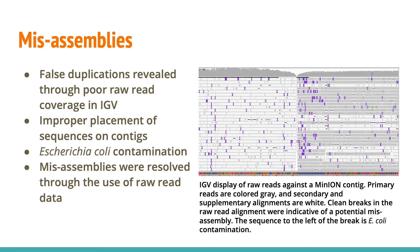Another indication of a misassembly was a region of the contig where the majority of the coverage was from secondary alignments. Misassemblies were resolved by extracting raw reads in the region with long soft-clipped ends and using them as queries in a BLAST search against the genome to identify any matches on other contigs.